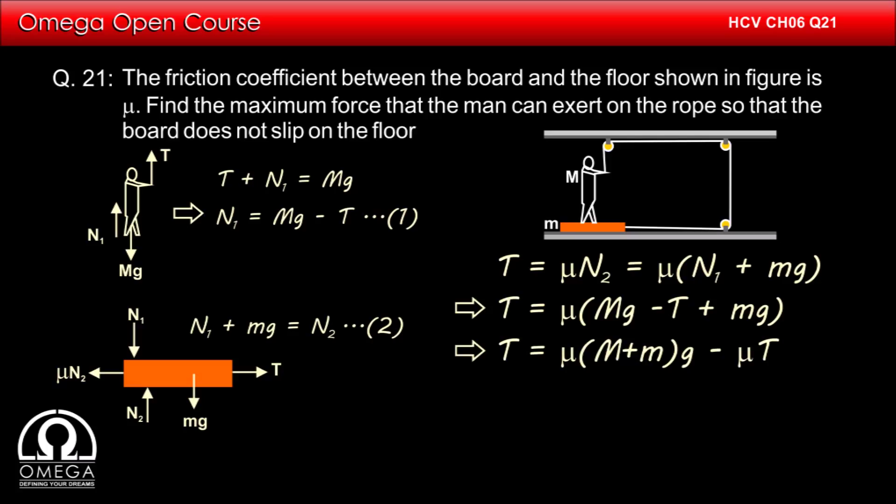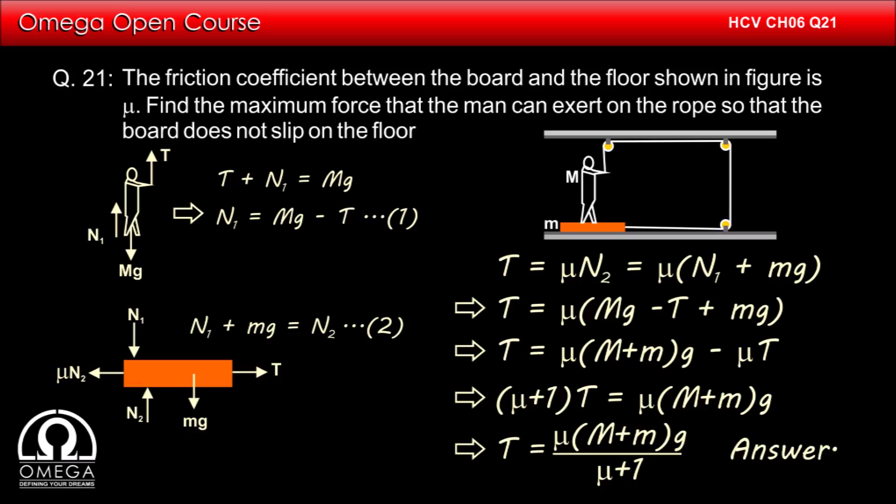Rearranging, we get T equals mu M plus mg minus mu T, which implies mu plus 1 into T equals mu times capital M plus m into g, which implies T equals mu times capital M plus m into g divided by mu plus 1. This is our answer.